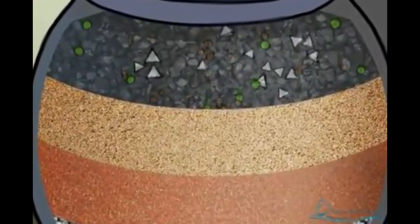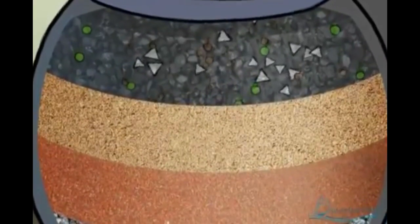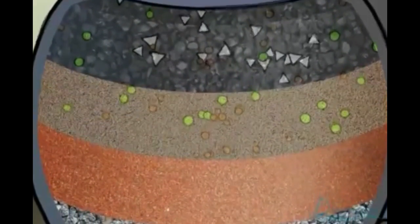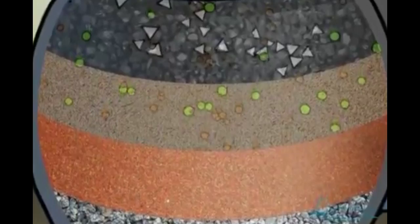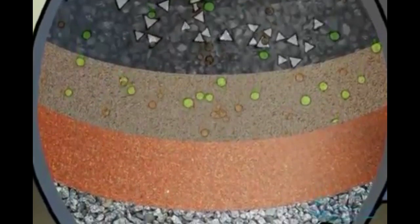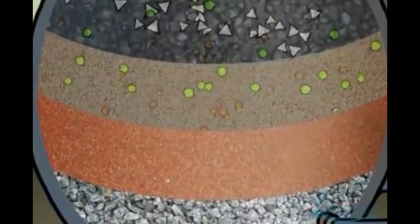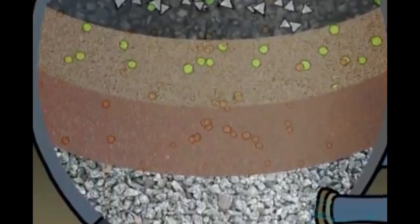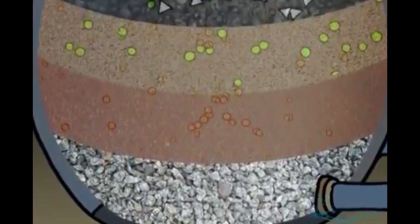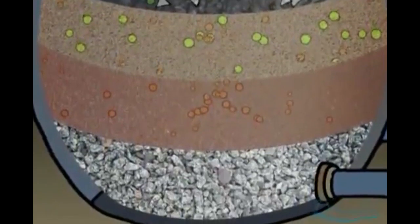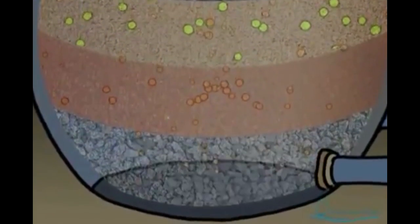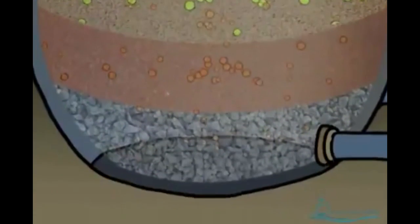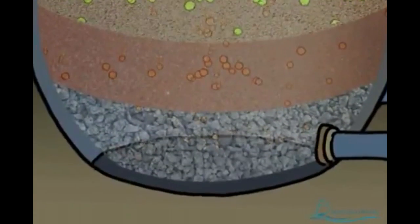The filters remove sand, twigs, seaweed, and other particles from the seawater. In some cases, other types of membranes, known as ultrafiltration and microfiltration membranes, are used instead of multimedia filters to pre-treat the seawater.